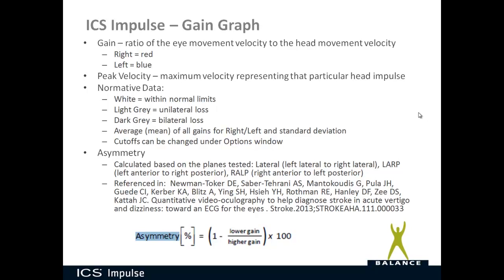The peak velocity shown at the bottom represents the maximum velocity for each particular head impulse. The normative data cutoffs can be changed in the options window if you collect your own normative data. The cutoff was originally 0.6, then raised to 0.8 in version 1.2 based on reanalysis of a large global dataset by Ian Kurthois, establishing 0.8 as the current cutoff between normal and abnormal.